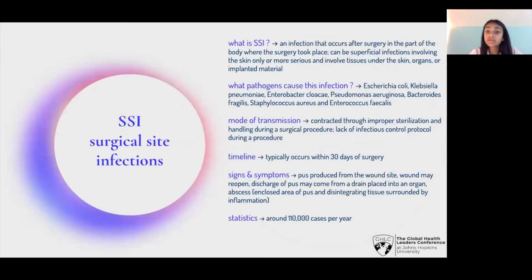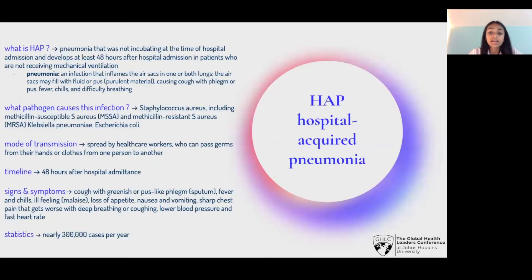Next is a surgical site infection — an infection that occurs after surgery in the part of the body where the surgery took place. These can be superficial, meaning they only involve the skin, or more serious, involving tissues under the skin, organs, and even implanted material. Next is HAP, or hospital-acquired pneumonia — pneumonia not present or incubating at the time of hospital admission, developing at least 48 hours after admission in patients not on mechanical ventilation. Pneumonia inflames the air sacs in one or both lungs, which may fill with fluid or pus, causing coughing with phlegm, fever, chills, and difficulty breathing.